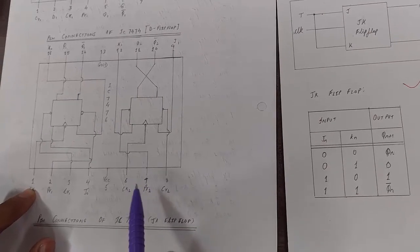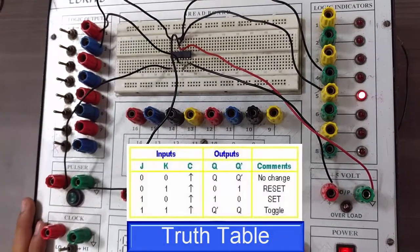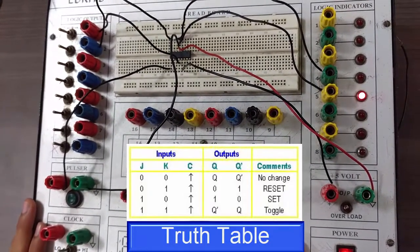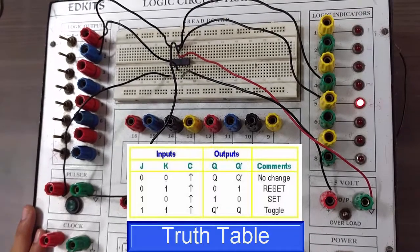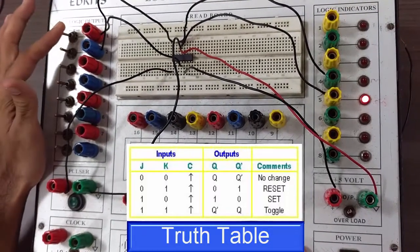Now let's verify the truth table for JK flip flop using IC 7476. You have to learn the pin diagrams of IC 7476 to verify the truth table for JK flip flop.